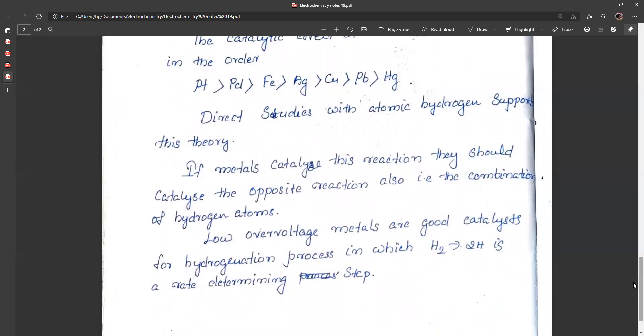High overvoltage metals are good catalysts for hydrogenation processes in which H2 gives 2H as the rate determining step. The decomposition of hydrogen also shows that low overvoltage metals are good catalysts.